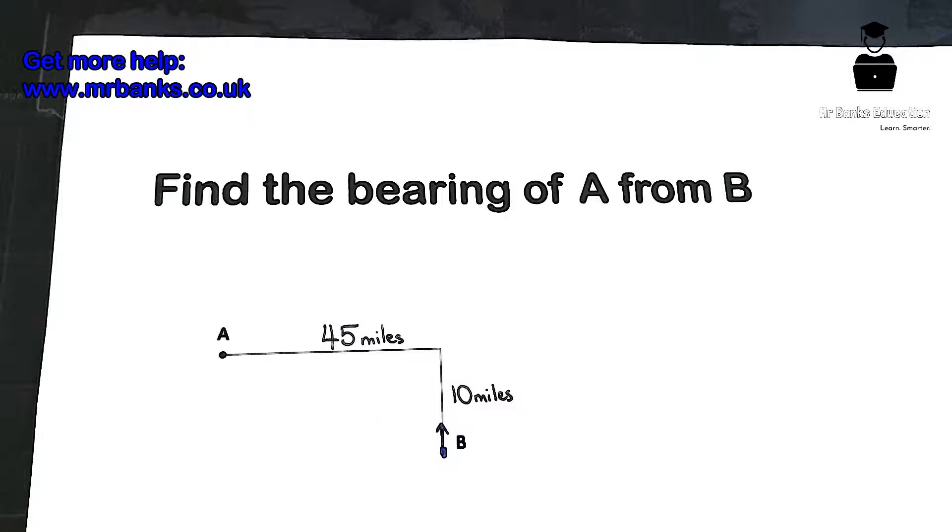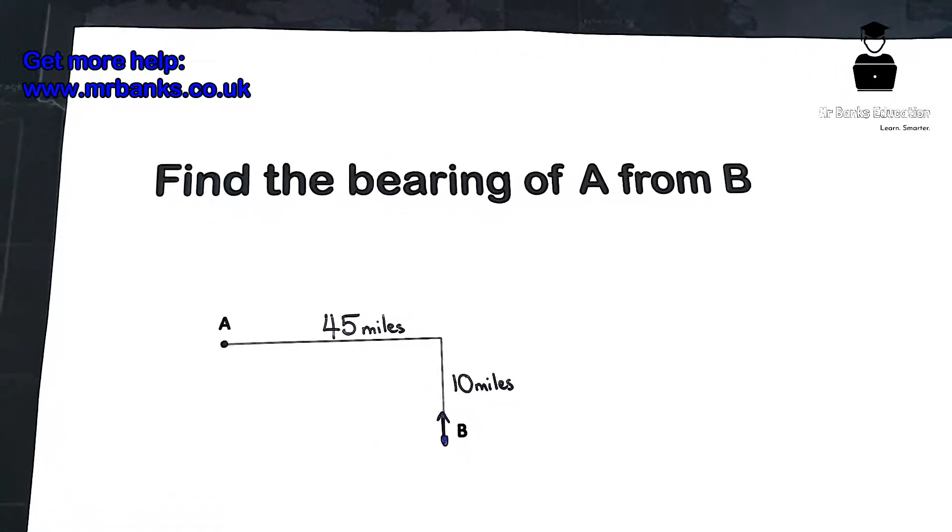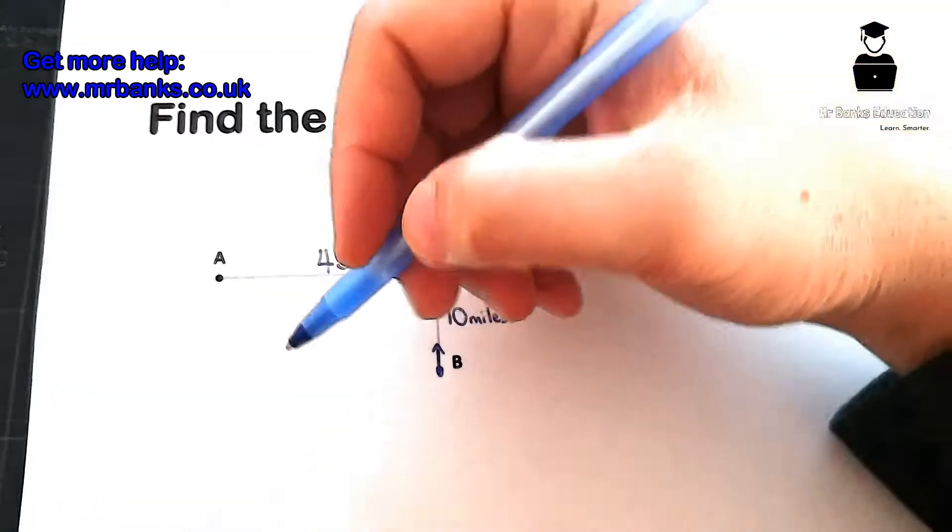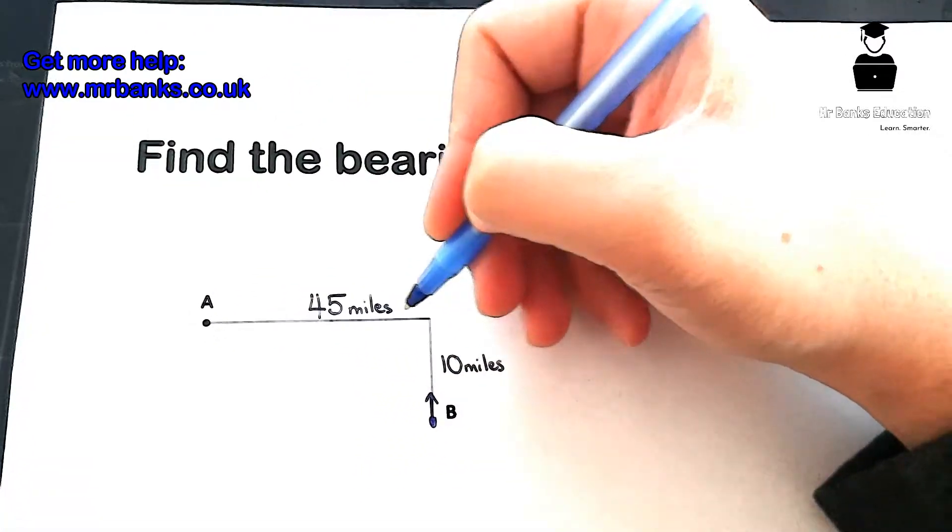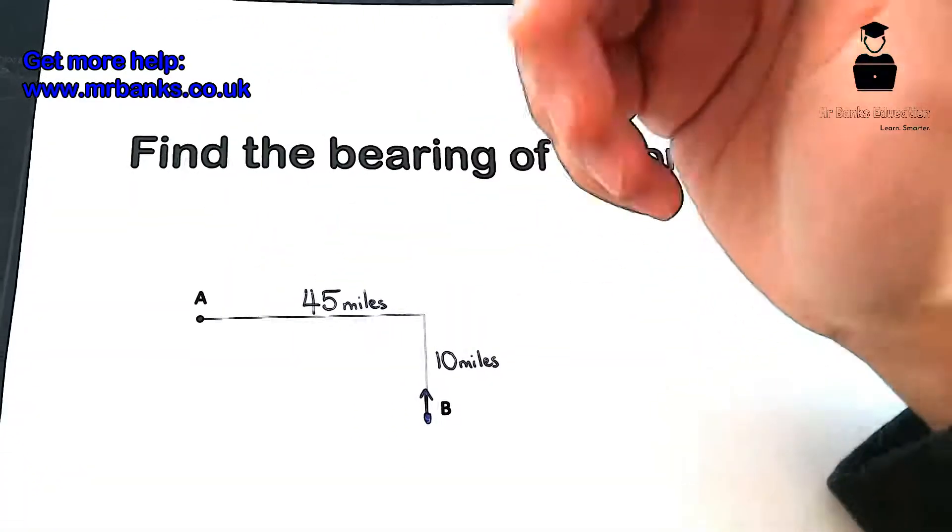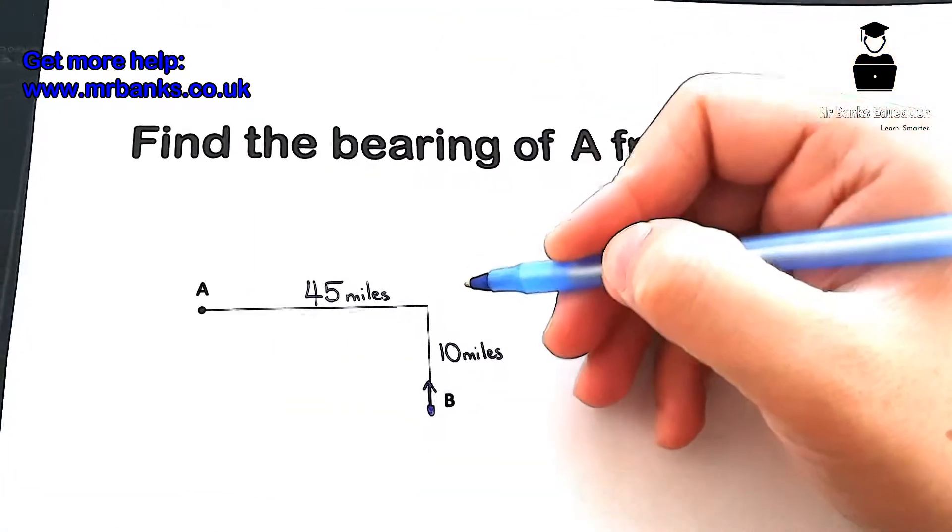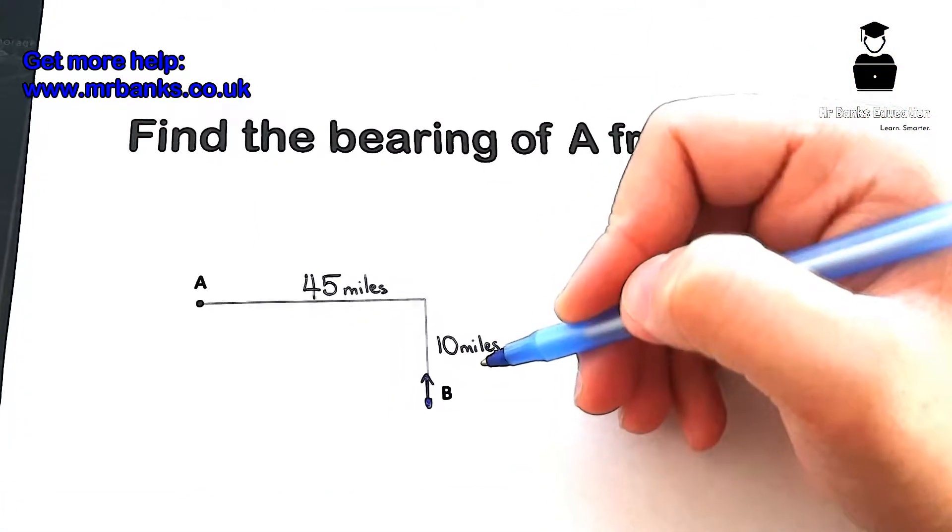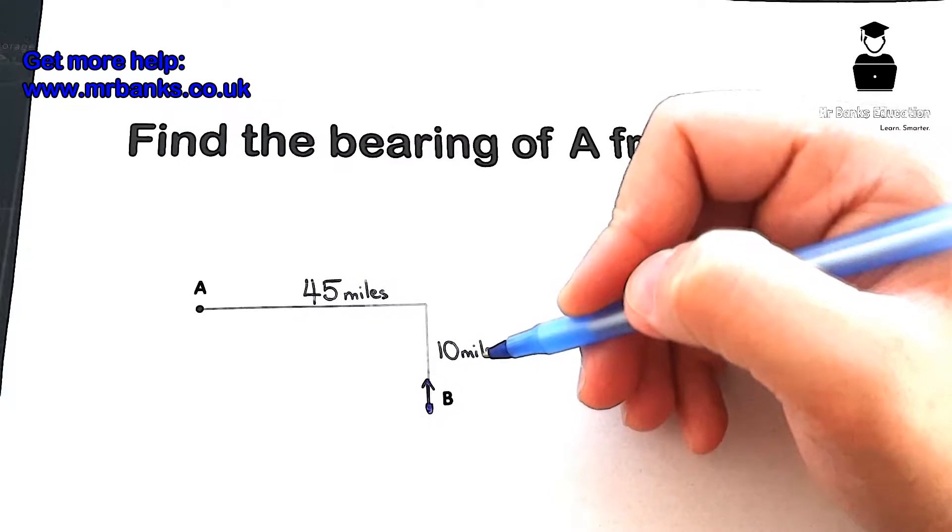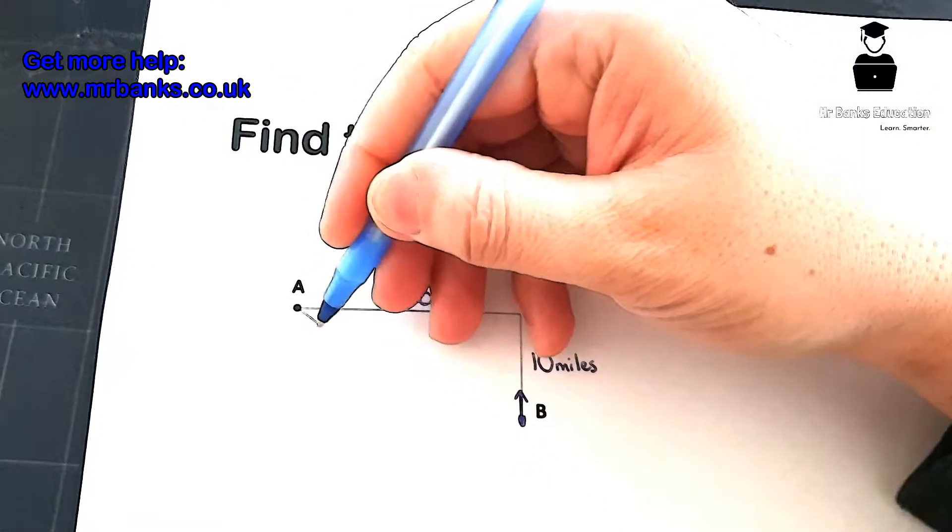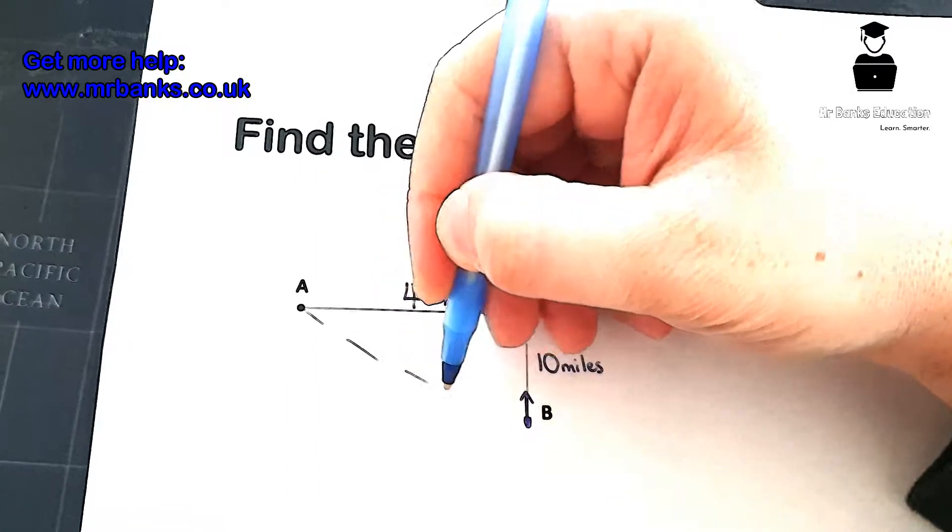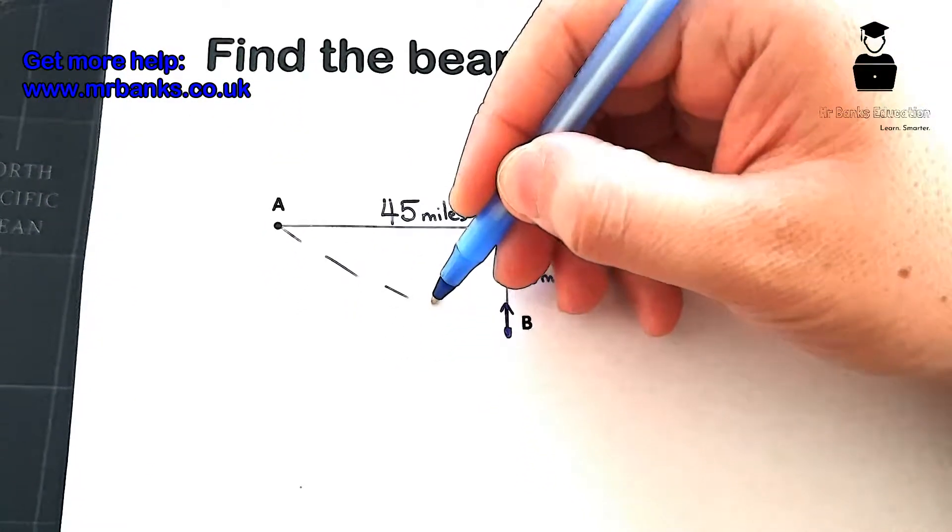Now in order for us to calculate any bearings we need to know angles. As you can see, this person has traveled 45 miles this way, east, and then downwards they've gone south 10 miles. You can see that there is a right angle triangle forming here.